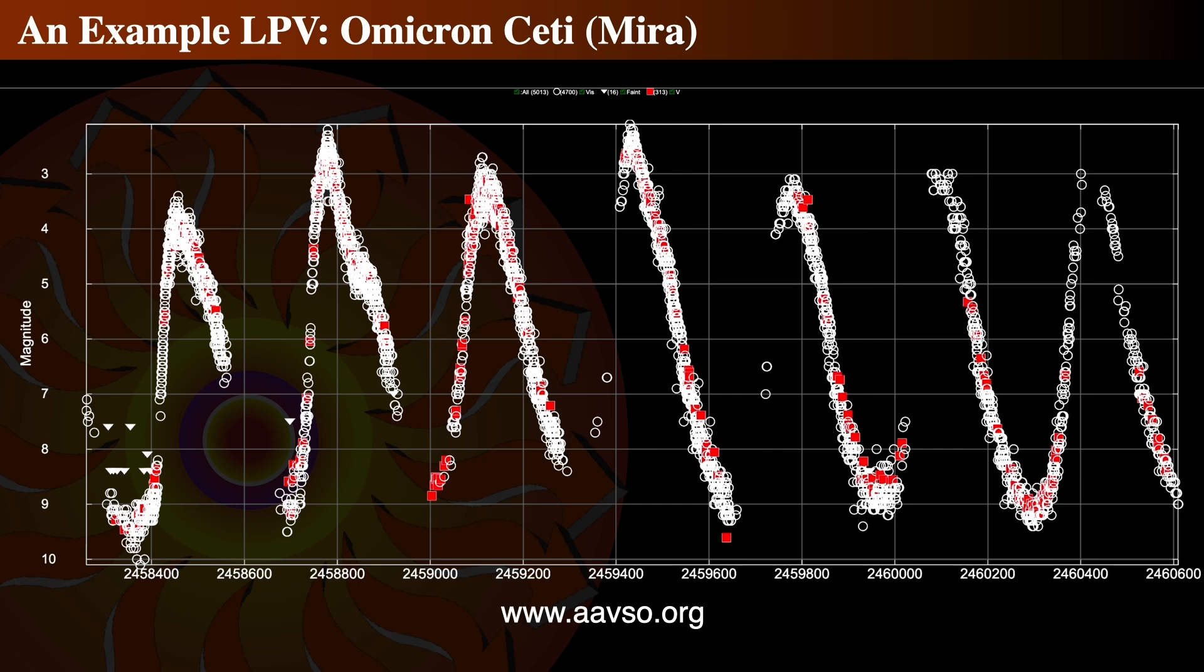The variable star named MIRA, or Omicron CETI, is one such star. This light curve is provided by the American Association of Variable Star Observers and shows the last six years of data. Most of these observations are visually by eye, either with binoculars or through a telescope. MIRA can vary up to seven magnitudes. And remember that a difference of five magnitudes is a difference of brightness of a hundred times. So this star can vary over a hundred times in brightness over about three hundred days.